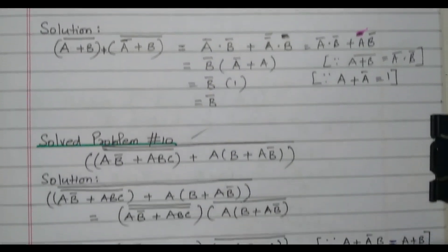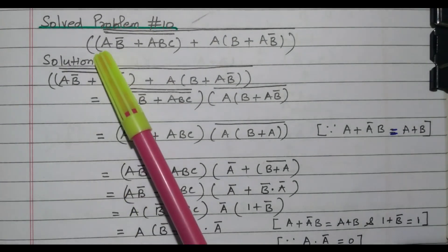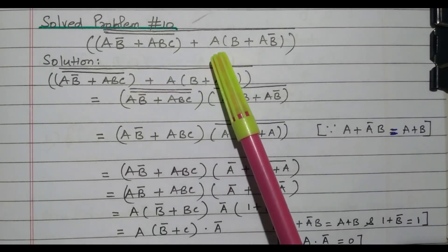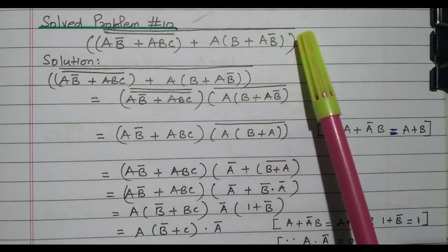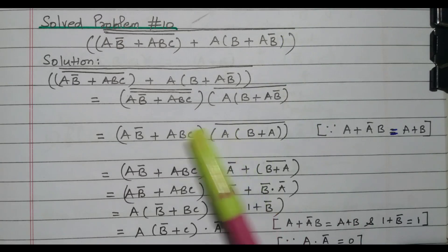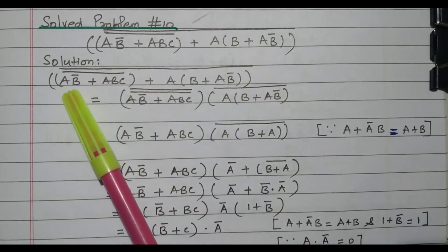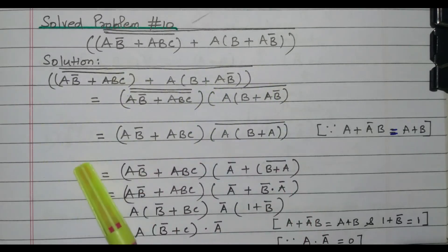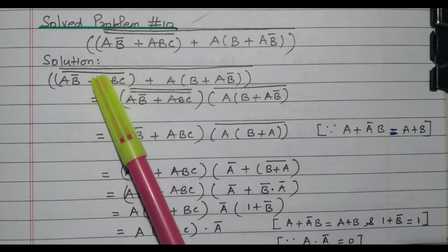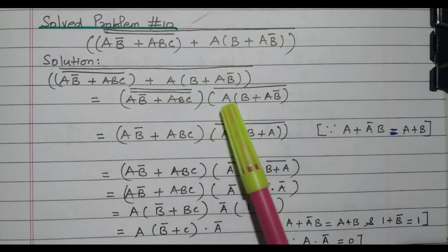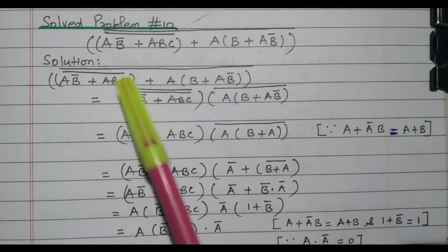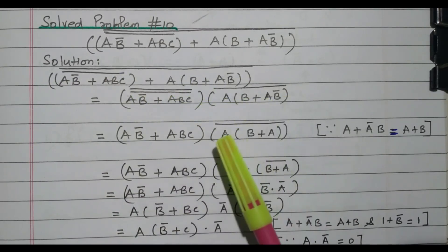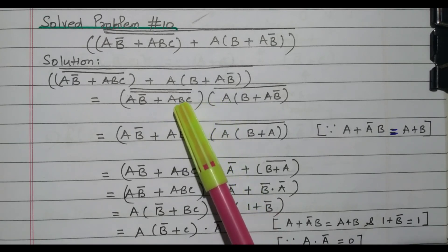Now we will go to the third problem. The expression is: AB-bar plus ABC the whole bar plus A into B plus AB-bar, with an entire bar over the whole expression. By applying De Morgan's theorem A plus B the whole bar equals A-bar into B-bar, taking this first part as A and the second part as B, we write the result accordingly.